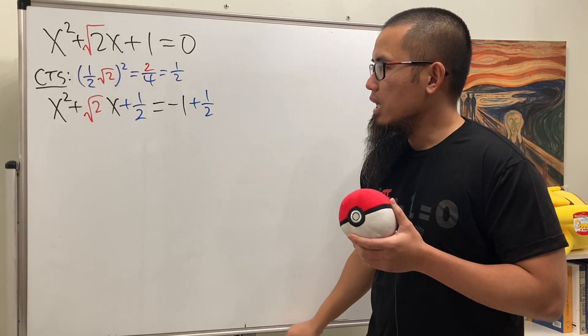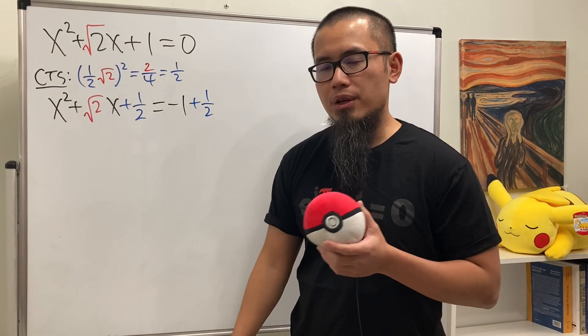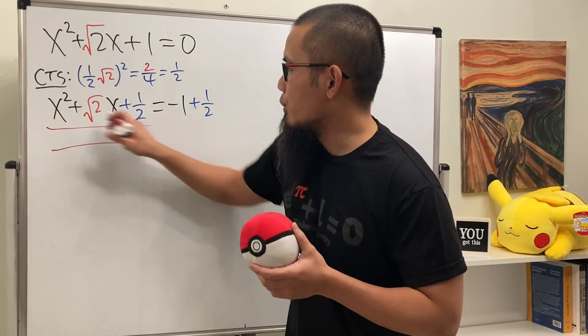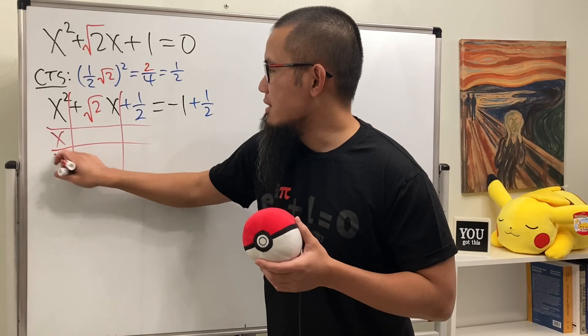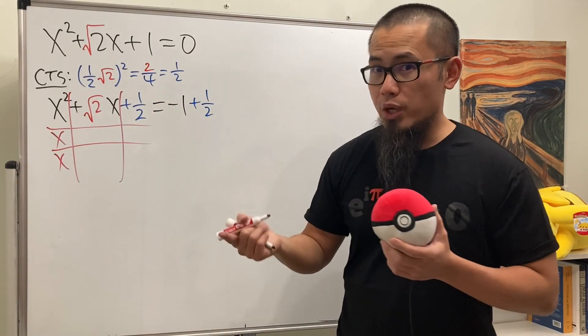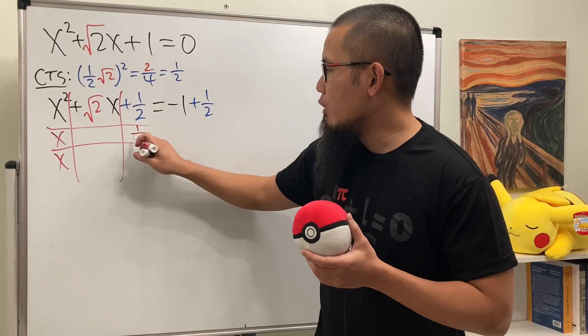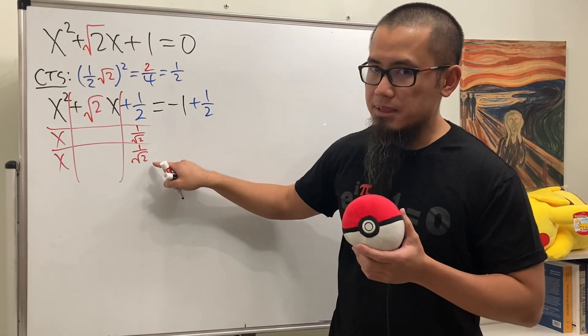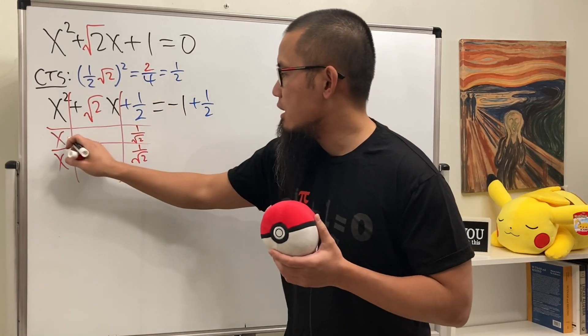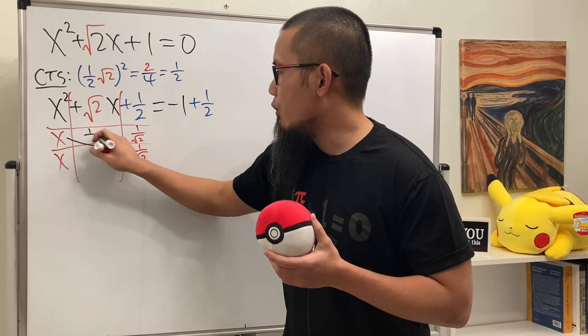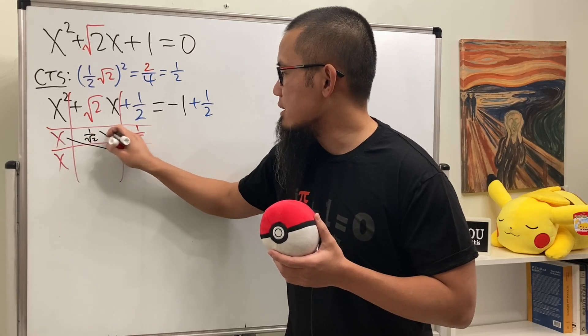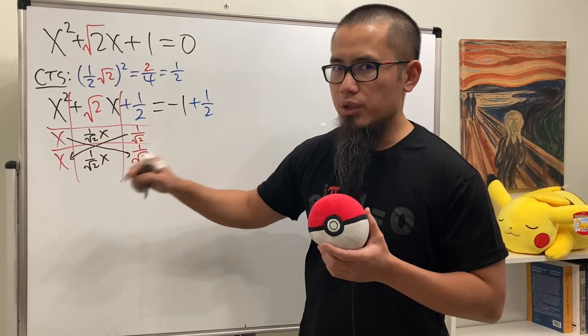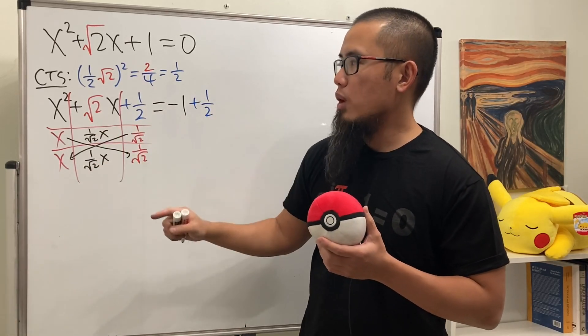And the truth is, this becomes factorable. And it's going to be a perfect square. Let me show you the tic-tac-toe method real quick. x times x gives you x squared. Right here, we're going to break it down by putting 1 over square root of 2 and 1 over square root of 2. This times that will give you 1 over 2. And together, you see, this times this is 1 over square root of 2x.